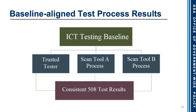Baseline-aligned test process results. In this graphic, the ICT testing baseline is connected to Trusted Tester, scan tool A process, and scan tool B process — all three linked to a consistent 508 test result. You can use just a manual process, a scanning tool, or multiple scanning tools in combination to create consistent test results.